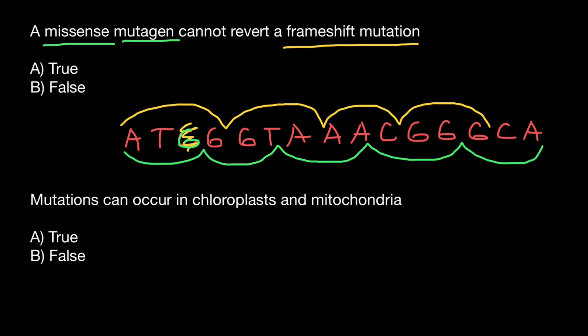So now we can choose the correct statement. A missense mutagen is going to just change some nucleotides, but would not be able to delete or insert nucleotides, which would cause a frameshift mutation or reverse a frameshift mutation. In order to reverse a frameshift mutation, a mutagen must be able to insert or delete nucleotides. So the correct answer is: a missense mutagen cannot revert a frameshift mutation. This is true — answer A.